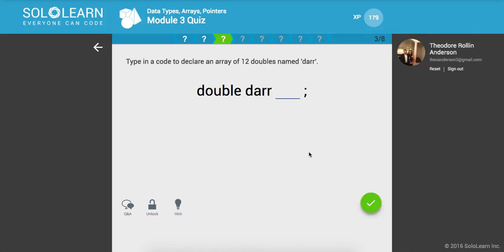Type in a code to declare an array of 12 doubles named dar. Okay. So we're going to give this double dar. It's going to be array of 12. Make sure I got that right. Awesome.